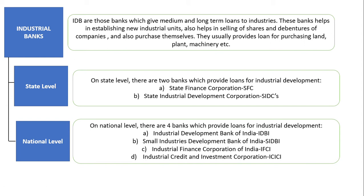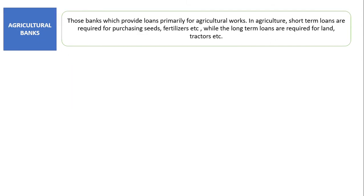The next type of bank is Agricultural Bank — those banks which provide loans primarily for agricultural work, mainly for farmers and small traders. In agriculture, short-term loans are required for purchasing seeds, fertilizers, etc., while long-term loans are required for land and tractors.